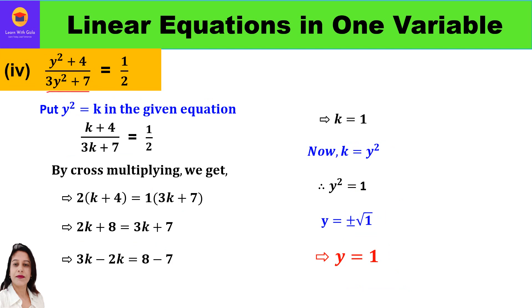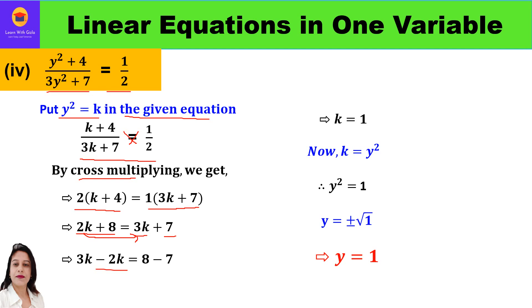The fourth part is: (y² + 4) / (3y² + 7) = 1/2. Again it's a quadratic equation, so we convert it into a linear equation by putting y² = k. We get: (k + 4) / (3k + 7) = 1/2. Cross multiplying: 2(k + 4) = 1(3k + 7). Opening brackets: 2k + 8 = 3k + 7. Taking 2k to the other side and 7 to the other side gives us 3k - 2k = 8 - 7.